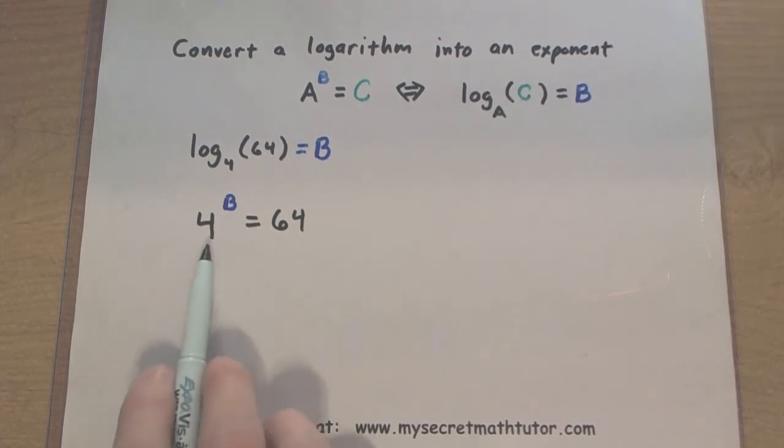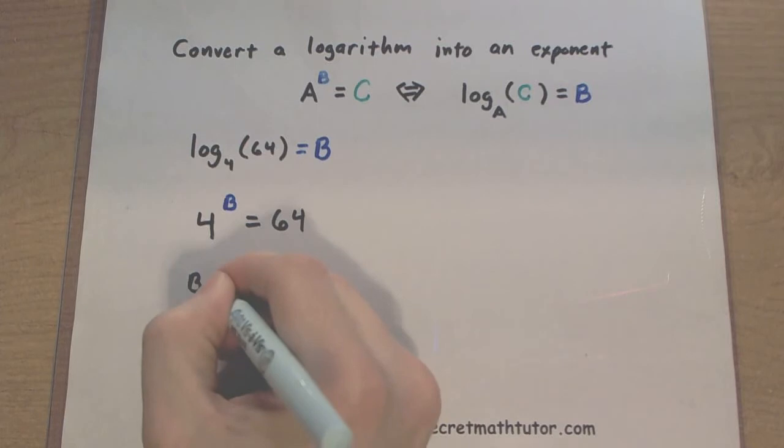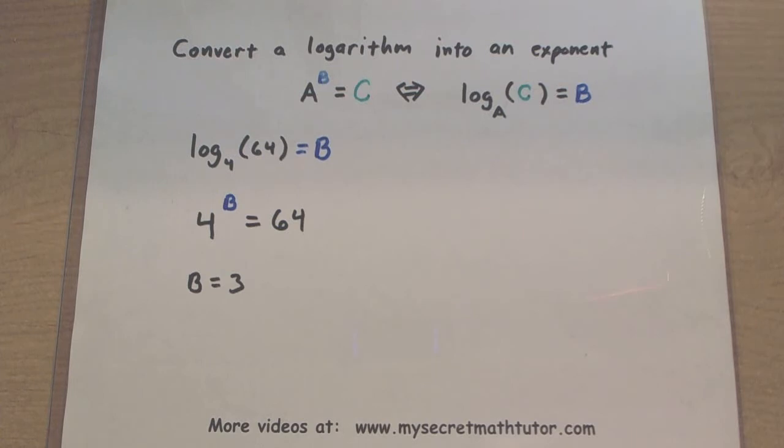Now when I'm looking at this problem, I think to myself, 4 to what power is actually equal to 64? Thinking about this for a bit, I know that B must equal 3. Because 4 to the third power is actually equal to 64.